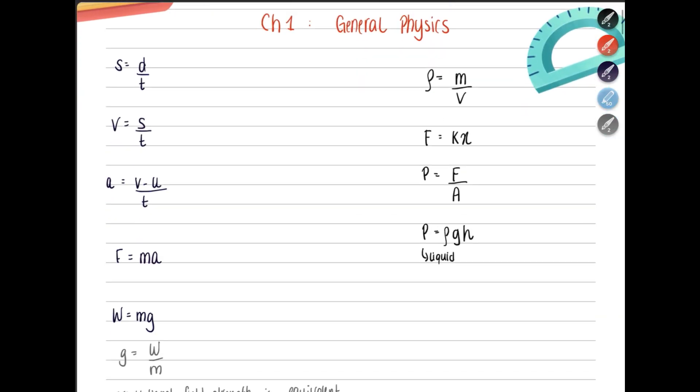And then we have some equations for density. Density equals mass divided by volume. F equals Kx. This is the Hooke's law. The equation is force equals K, which is the force constant, multiplied by extension, the change in the length of the spring when force is applied.